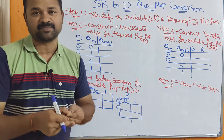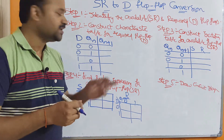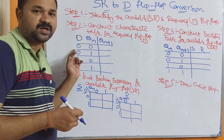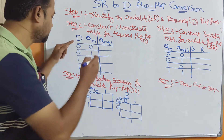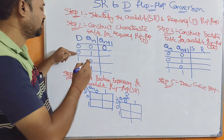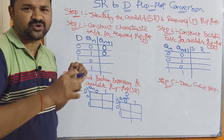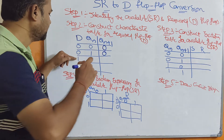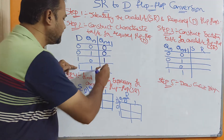Now let us find the next state output. D flip-flop means data flip-flop — it is useful for storing the data. Irrespective of the current state output, the next state output is D only, because D means data for storing. So when D is 0, QN+1 is 0; when D is 1, QN+1 is 1.